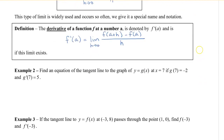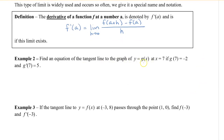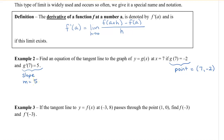Let's take a look at an example. Find an equation of the tangent line to the graph of y equals g of x at x equals seven, if g of seven is negative two and g prime of seven equals five. So g of seven equals negative two means this is our point, which is seven, negative two. And g prime of seven equals five — this is our slope — meaning the slope at an x value of seven is five.